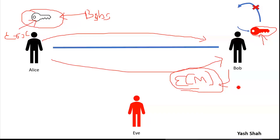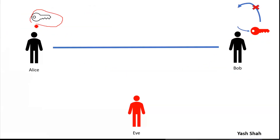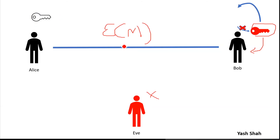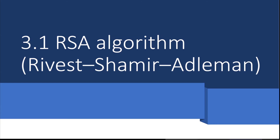One key is used for locking and another key is used for unlocking. The locking key is public and the unlocking key is private. Now we have to see the mathematical part of this particular approach.